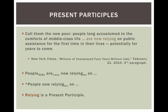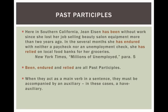Here's a different kind of participle — the past participle. It functions roughly the same way, going with different auxiliaries, but locates whatever we're talking about at a different point in time. 'Jean Eisen has been without work since she lost her job selling beauty salon equipment more than two years ago. In the several months she has endured with neither a paycheck nor an unemployment check, she has relied on local food banks for her groceries.' Here 'been,' 'endured,' and 'relied' are all past participles — they go with a verb that locates the event in the past.